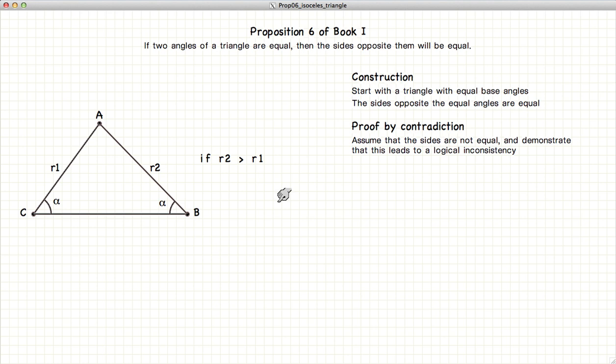So we're going to prove that this is true by assuming first that it's not. So let's assume that AB is the longer of the two sides and we will label it R2 and that it is longer than AC which we label R1.